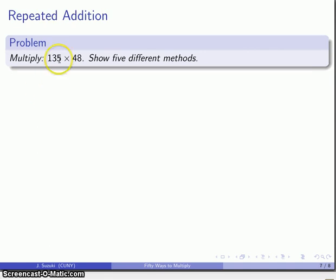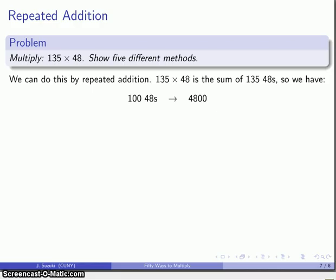Well, how about as a repeated addition? So, again, this is the product 135 times 48. Well, that's 135 48 times. And so, I might do that as the following. So, I have 148. Well, that's 4,800. I have 30 48s. That's 1,440. And then I have 5 48s. And that's going to be 240. And I'll add those together to get my total 6,480.